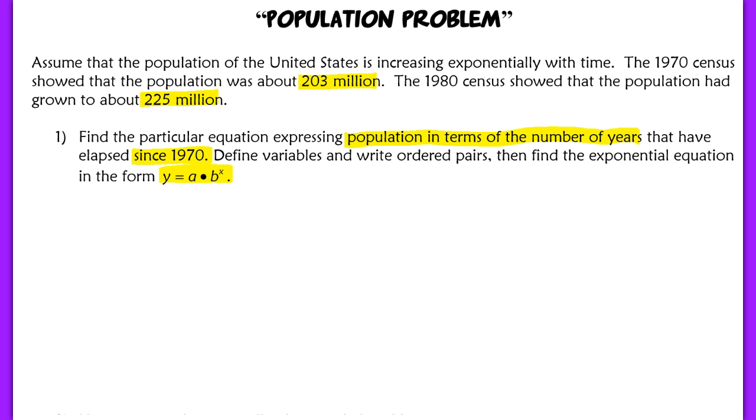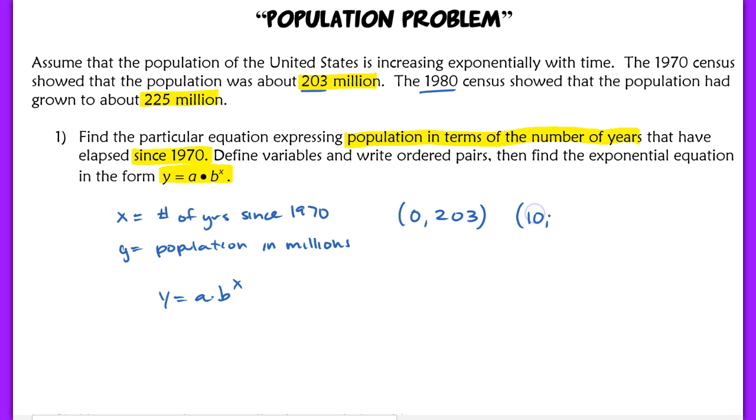Let's start by defining our variables. x is going to be denoted as the number of years since 1970. y will be our population in millions. We want to use y equals a times b to the x as our general equation. To find the particular equation, we first want to list our ordered pairs. The 1970 census represents when time is zero, so we have (0, 203). Our second coordinate is (10, 225) since 1980 is 10 years after 1970.